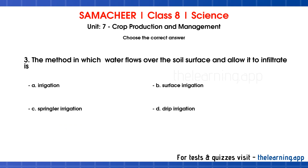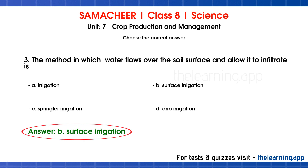Third question: the method in which water flows over the soil surface and allows it to infiltrate is — options are A. irrigation, B. surface irrigation, C. sprinkler irrigation, D. drip irrigation. The correct answer is option B, surface irrigation.